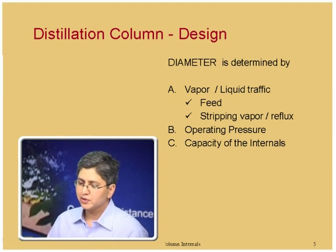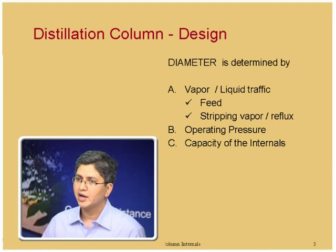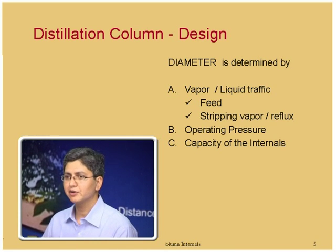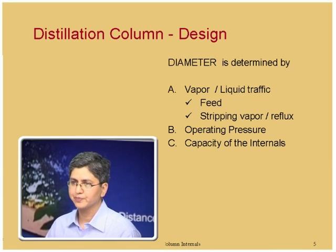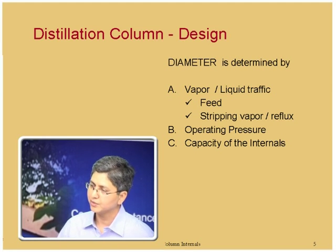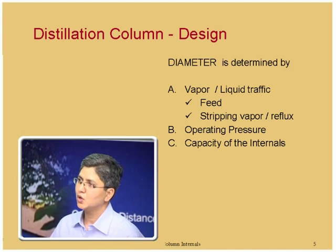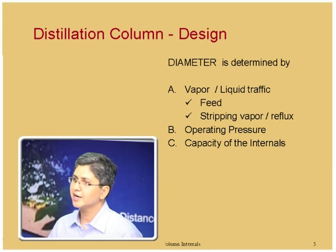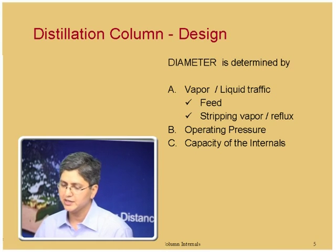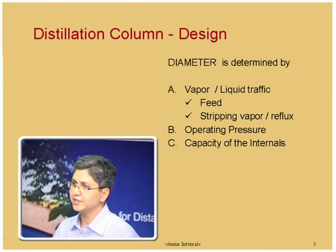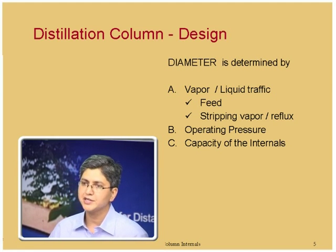The column diameter also depends on the operating pressure. Higher operating pressure means higher vapor density and hence a smaller column diameter. Under vacuum operation, since vapor density is very low, the same mass flow of vapor results in much larger volumetric flow and hence a much larger required column diameter. The diameter also depends on the capacity of the internals — specifically their ability to handle vapor-liquid traffic.